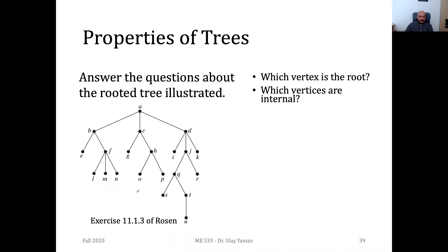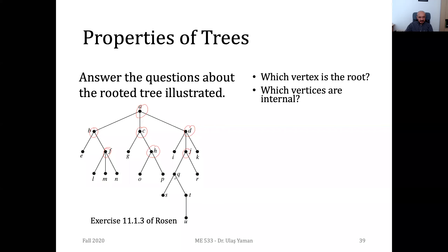The internal vertices are the ones which are not the leaves. So E is a leaf, L, M, N are leaves. The remaining non-leaf nodes are the internal vertices.